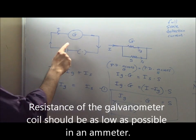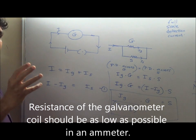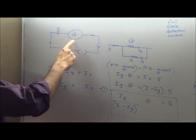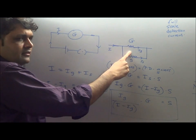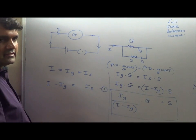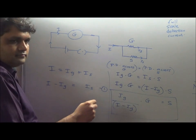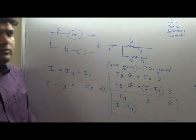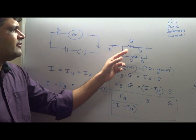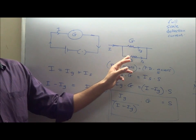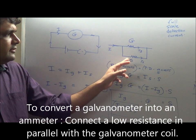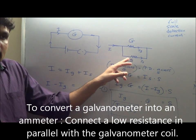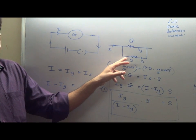Please observe: the resistance of the galvanometer coil should be as low as possible. The resistance of an ideal ammeter should be zero. Now, given this galvanometer coil, how can I decrease its resistance? If I connect another resistance in parallel with it, when you connect two resistances in parallel the overall resistance decreases. So, to convert a galvanometer into an ammeter, I have to connect another low resistance in parallel with the galvanometer coil.